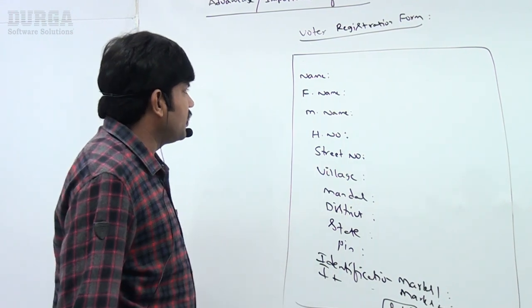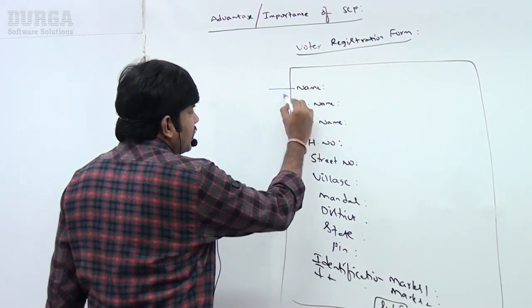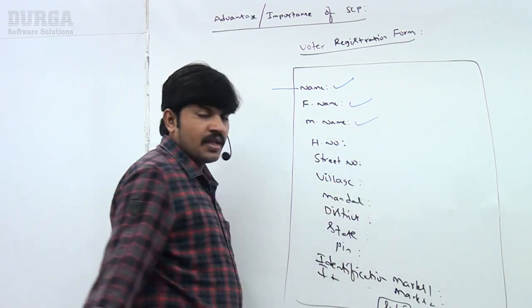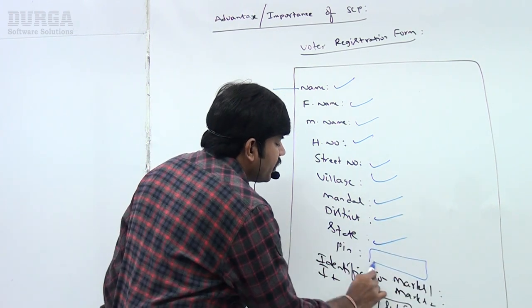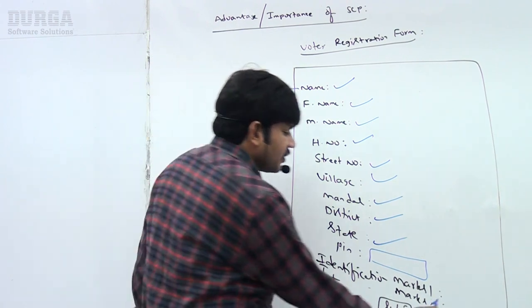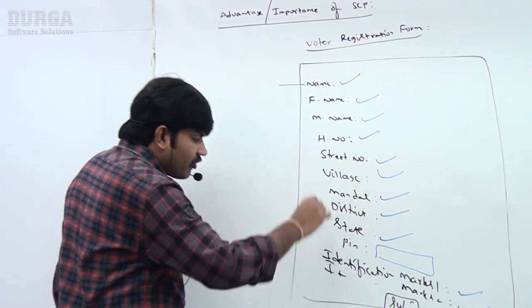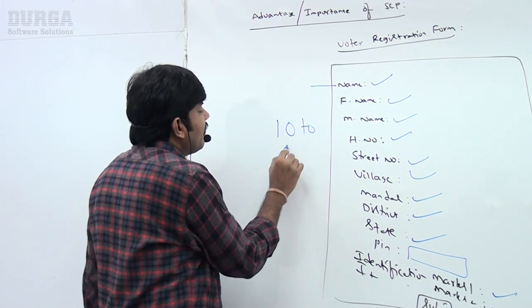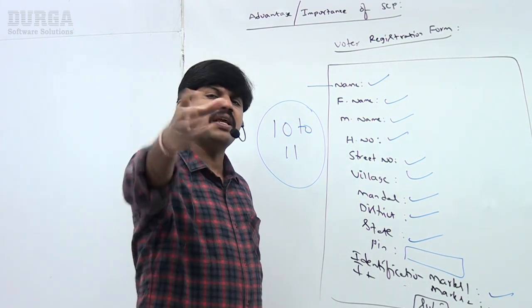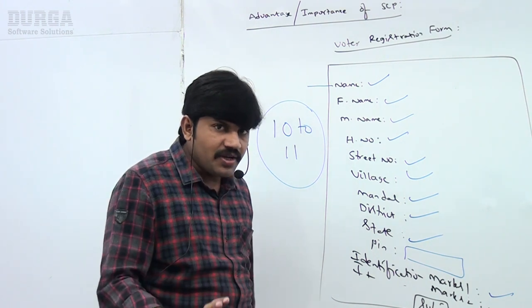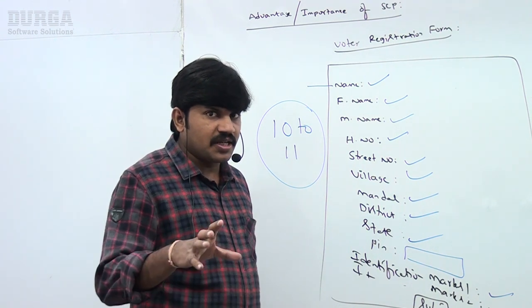In this form, how many String objects are there? Have you observed? Name is one String object. Father name, Mother name, house number, street number, village, Mandal, District, State — the pin code is a number, not a String — Identification Mark 1 and Identification Mark 2. Almost out of 12 or 13 fields, around 10 to 11 are String objects. So string object is the most commonly used object in any application.